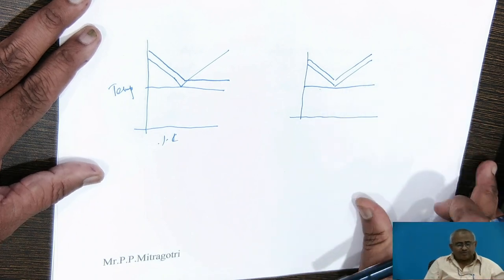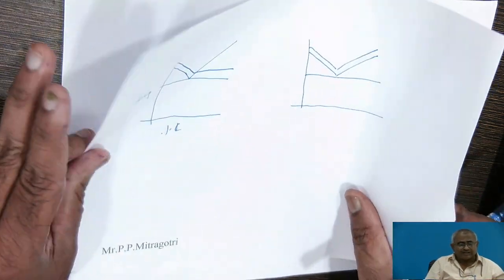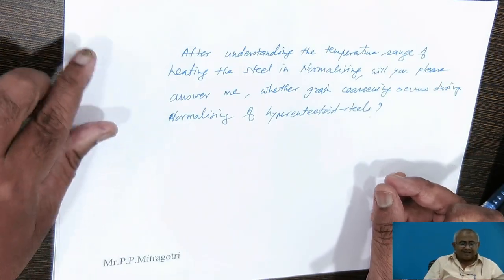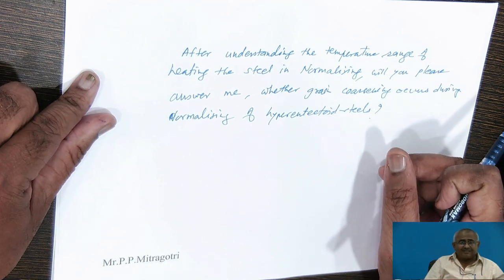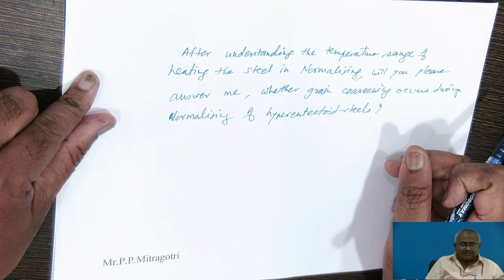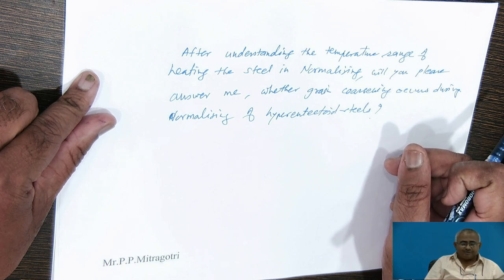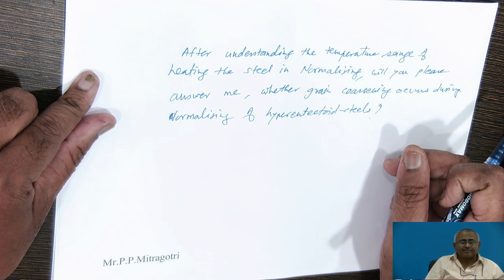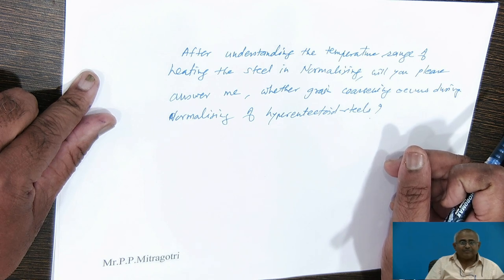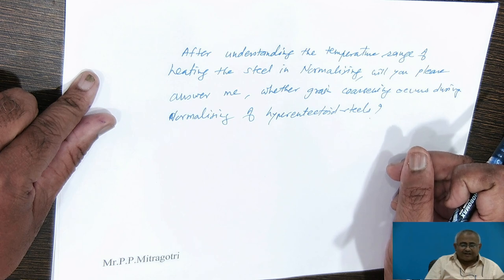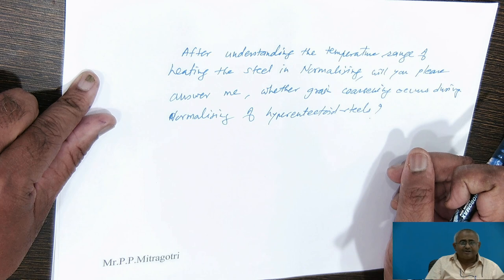We may have a question: in normalizing we are heating the steel above A3 temperature, while in annealing we heat hyper-eutectoid steel above A1 temperature only to avoid grain coarsening. So the question is: does grain coarsening occur in normalizing of hyper-eutectoid steel, or is grain coarsening avoided?